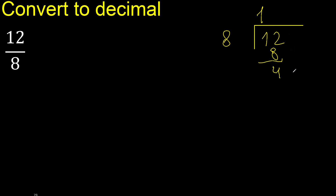There is no number that goes down further, therefore we complete with 0 and here with a decimal point.